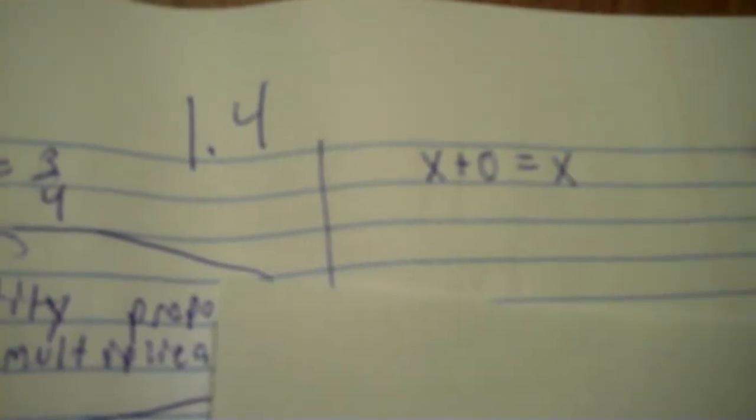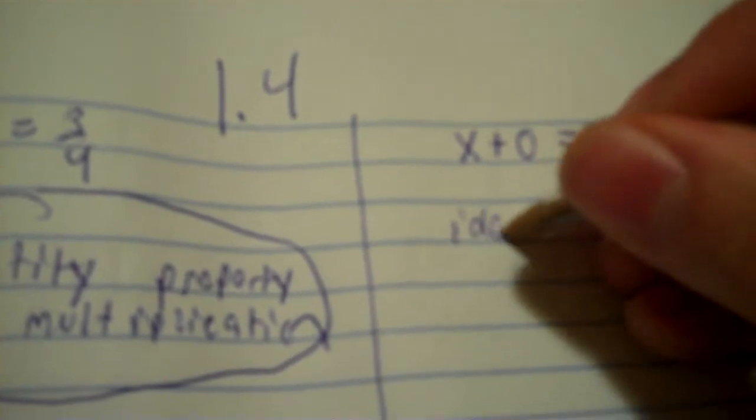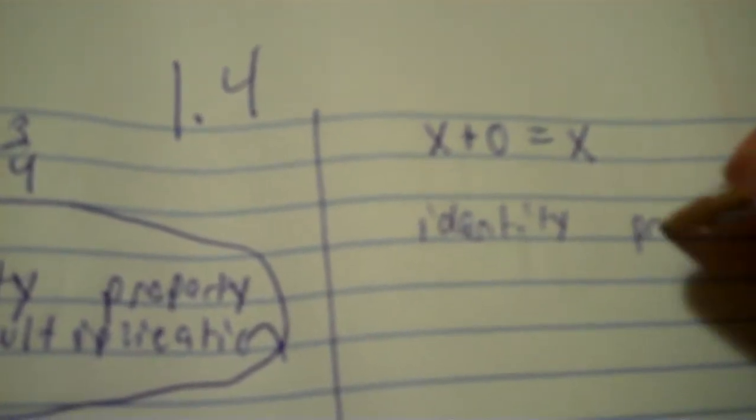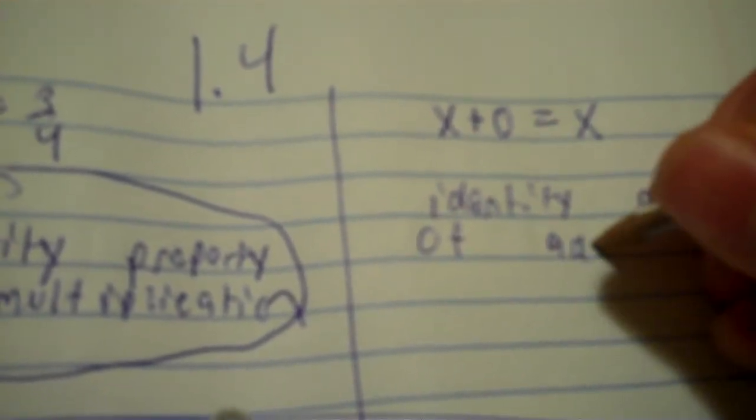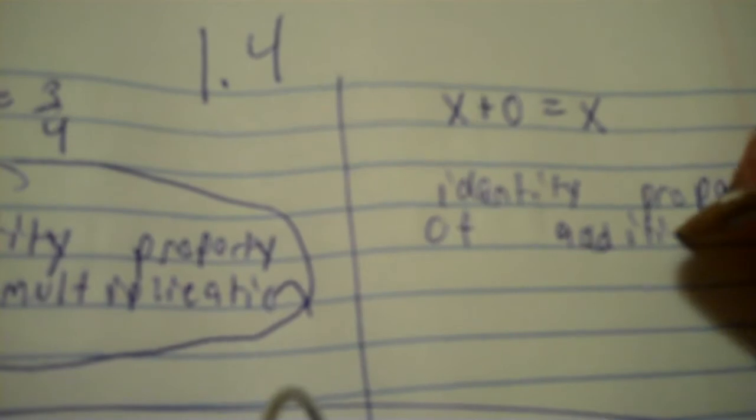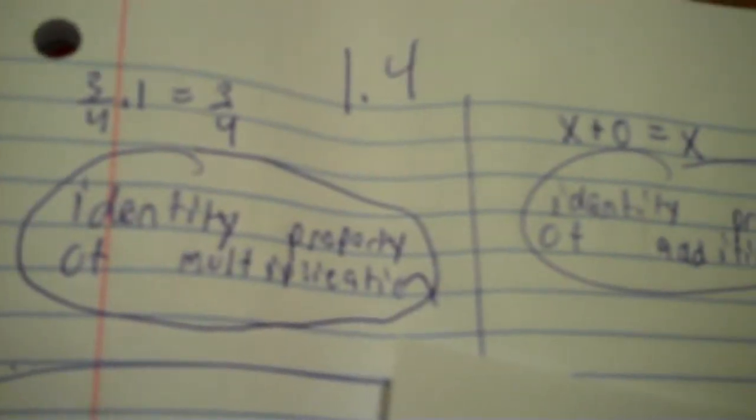The next one: I have a variable X. It can be any number — say six — and I add zero to it; it just goes back to the number you started with. When it goes back to what you started with, that is the identity property of addition. So whenever it returns to the original, it's identity property — multiplication or addition.